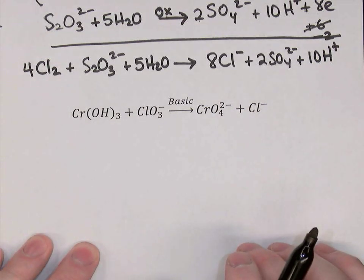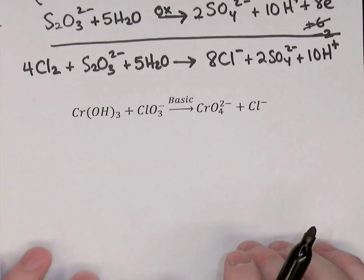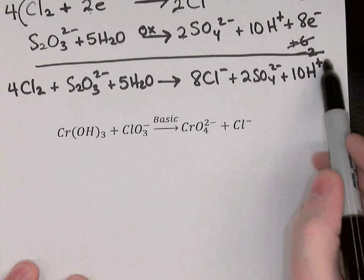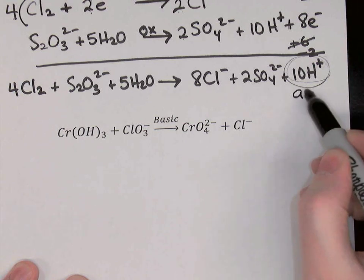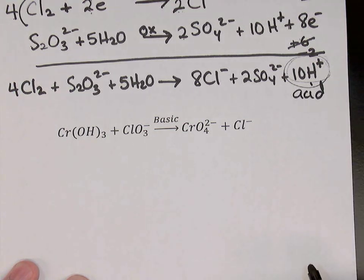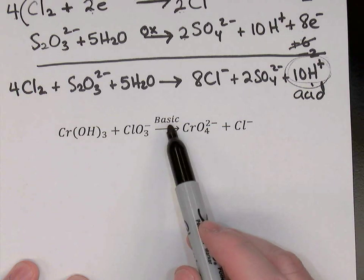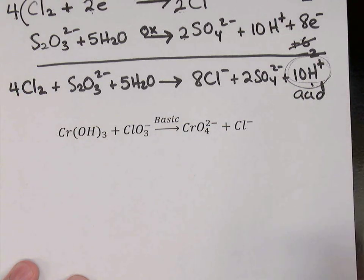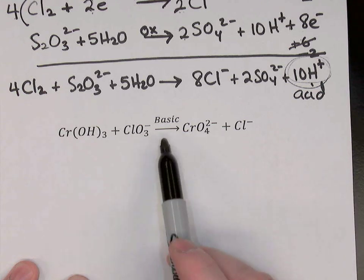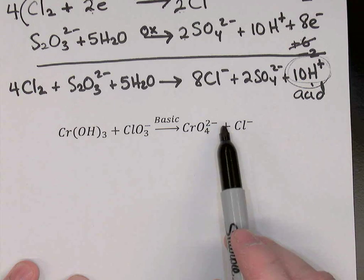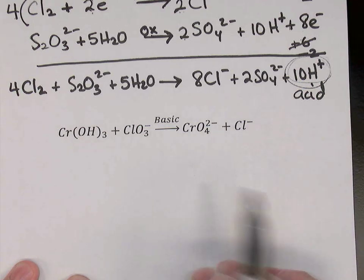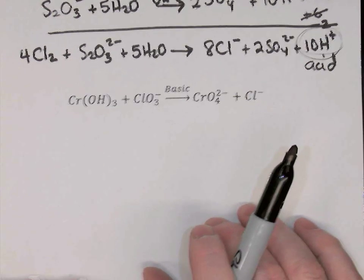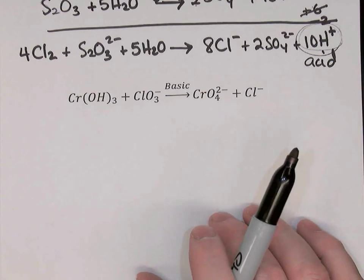The second example is a basic solution. The difference is that we can't end up with hydrogen ions in the equation — hydrogen ions are only found in acid solutions in large concentrations. So if we have a basic solution, we have to replace hydrogen ions with hydroxide ions, OH⁻. The approach is to balance as though it were an acid solution first, then fix it to make it basic at the end.